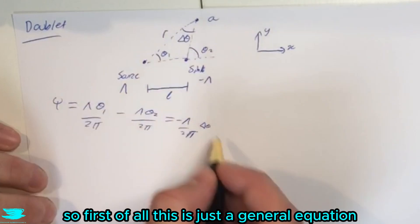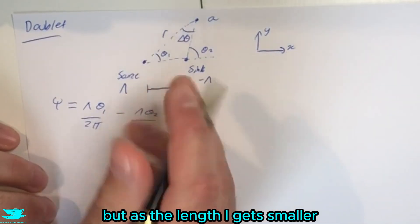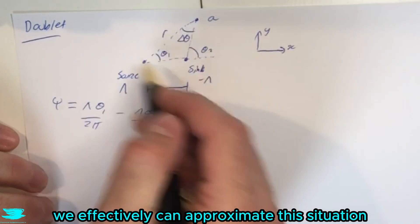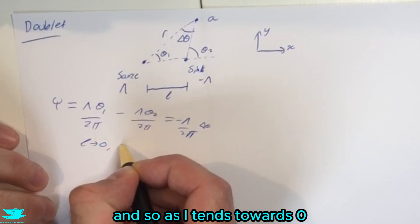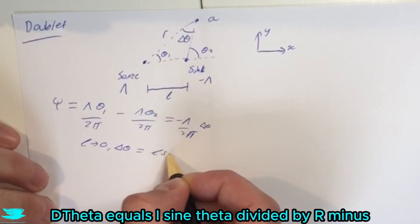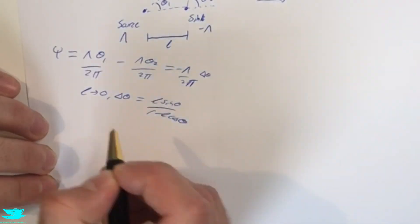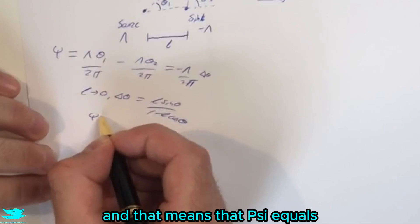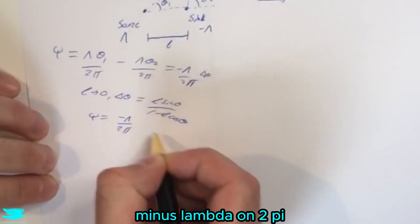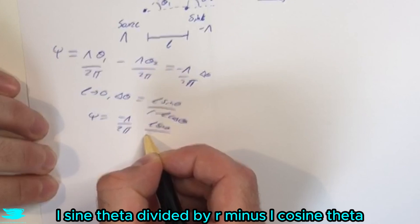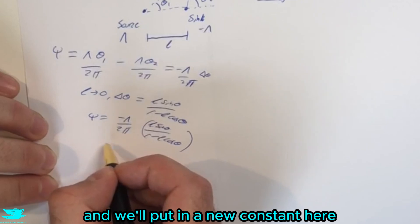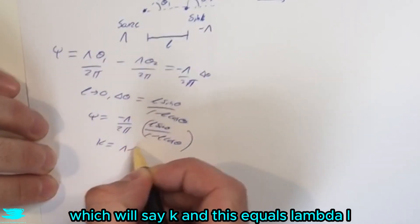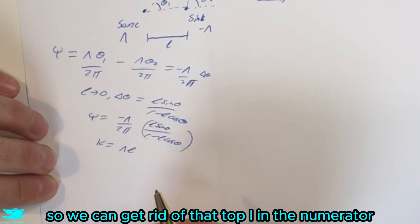So first of all, this is just a general equation. But as the length L gets smaller, we effectively can approximate this situation by a right angle triangle. And so as L tends towards zero, delta theta equals L sin theta divided by R minus L cos theta. That's an L there. And that means that psi equals minus lambda on 2 pi times L sin theta divided by R.